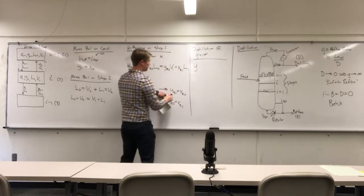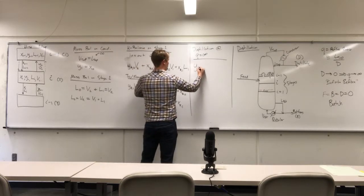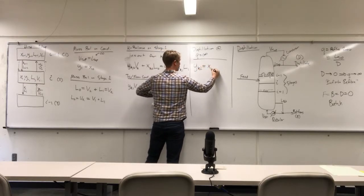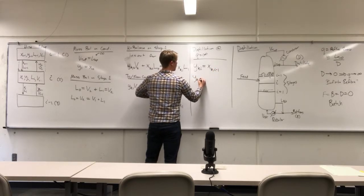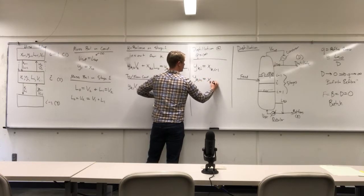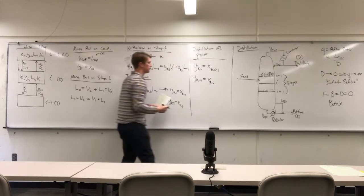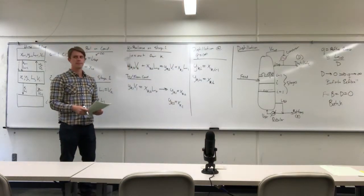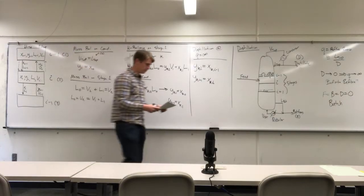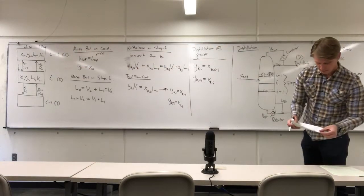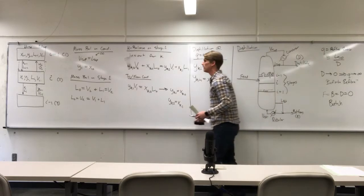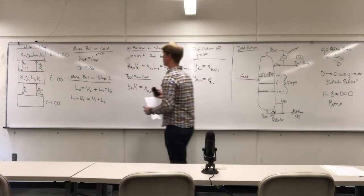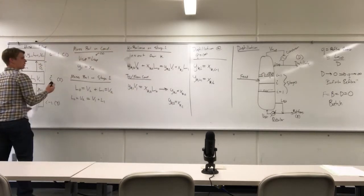This leads to our main conclusion for a distillation column at infinite reflux: the mole fraction of species k at stage i in the vapor is equal to the liquid mole fraction at stage i−1, and equivalently the vapor at stage i+1 equals the vapor at stage i.